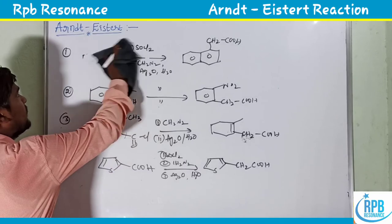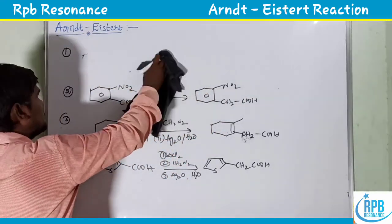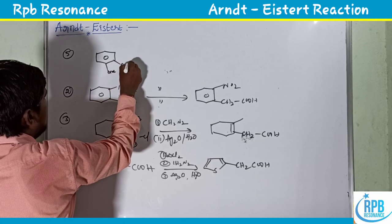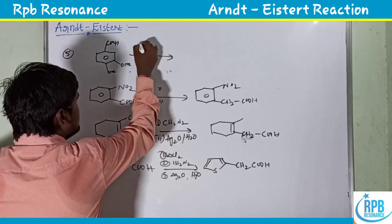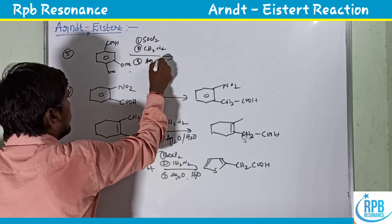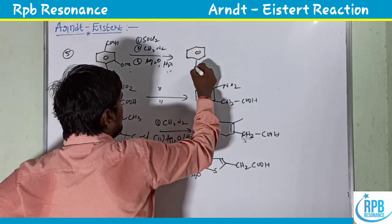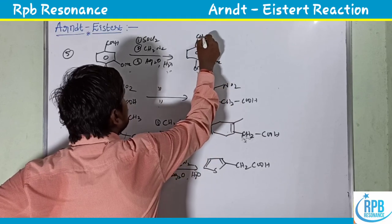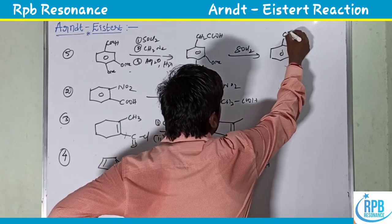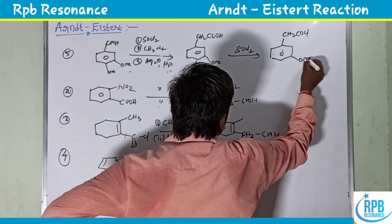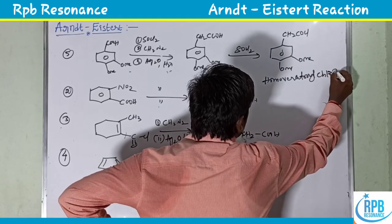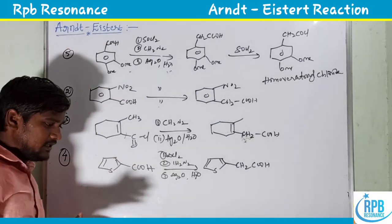Heterocyclic compounds — where R may be aliphatic, aromatic, allylic, or heterocyclic — can also undergo the Arndt-Eistert reaction using SOCl₂, diazomethane, catalyst, and water. A notable example: homo veratryl chloride synthesis. Veratric acid (3,4-dimethoxyphenyl COOH) is treated with SOCl₂, CH₂N₂, Ag₂O, then water to give 3,4-(OCH₃)₂-C₆H₃-CH₂COOH, which is then treated with SOCl₂ to give homo veratryl chloride (CH₂COCl).